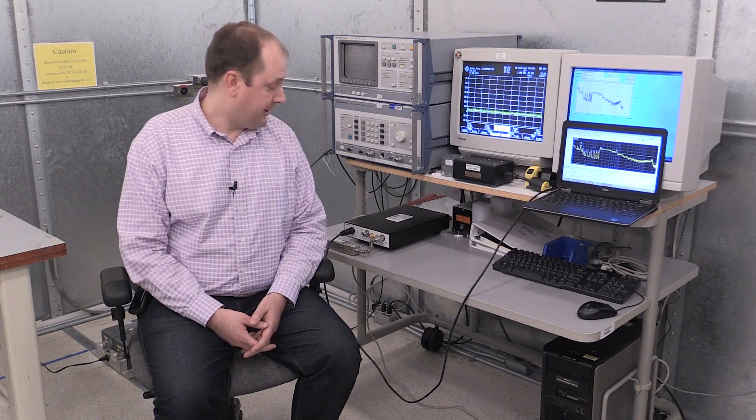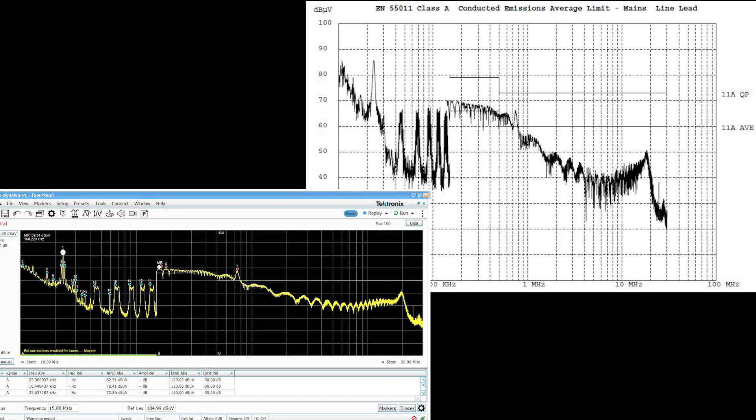So here's the side-by-side screenshots comparing the conducted emissions test with the results from the RSA on the lower left compared with the full compliant receiver on the upper right. You can see here again the traces correlate very nicely. In both cases I'm showing a CISPR peak detected trace and then I can actually see some failures in this particular case where I've exceeded the limit lines in some of the areas.